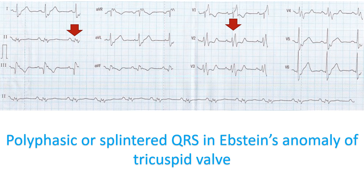In one case, the tachycardia ECG showed a left bundle branch block-like pattern with superior axis and was terminated with injection of verapamil. Detailed mapping showed an atrio-fascicular pathway located in the right posterolateral region, which was successfully ablated. RBBB pattern with splintered QRS, characteristic of Epstein's anomaly, was noted after ablation.